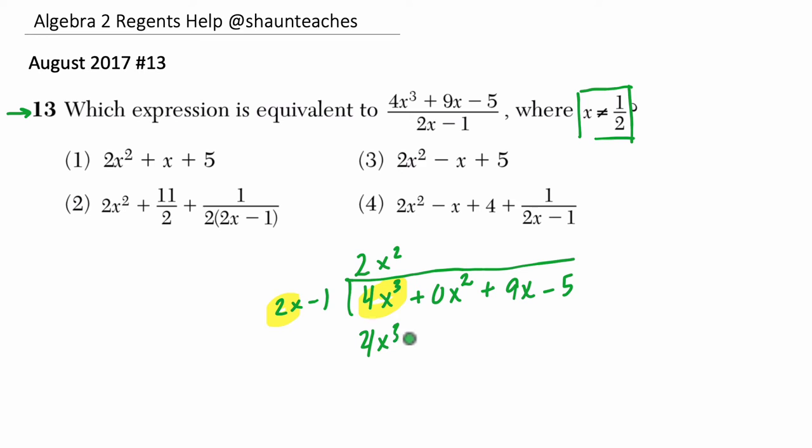We distribute that now to 2x and negative 1, and we're going to get 4x cubed minus 2x squared times 1, which is minus 2x squared, and then we subtract. The first two terms cancel, then we're really adding, we're subtracting a negative 2x squared, so you have plus 2x squared. Let's bring down our 9x term.